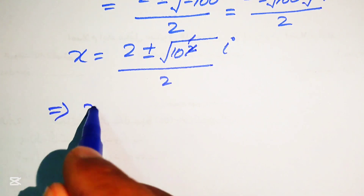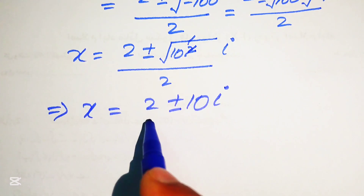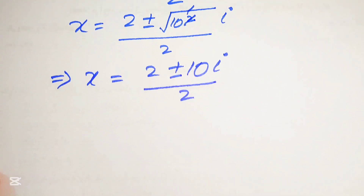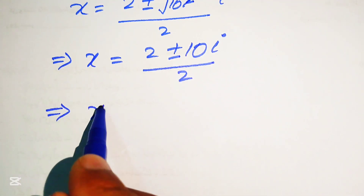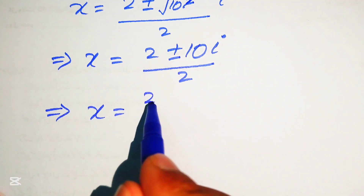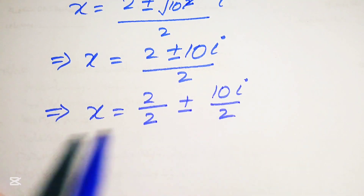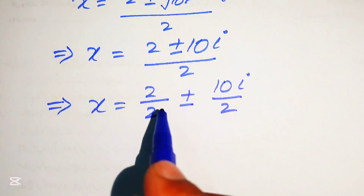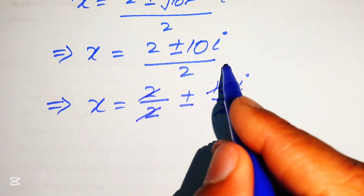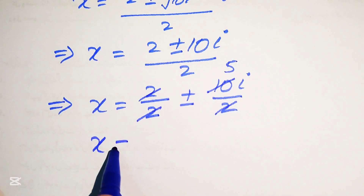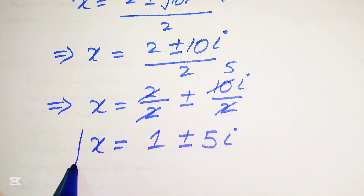Since √100 = 10, we have x = (2 ± 10i) / 2. Splitting the fraction: 2/2 ± 10i/2, the 2s cancel and 10/2 = 5, giving x = 1 ± 5i. These are the two complex roots from Equation 2.